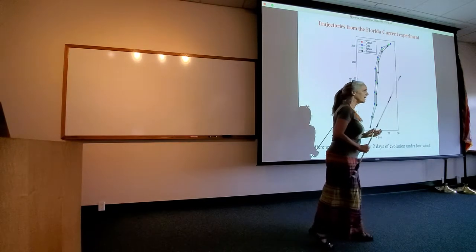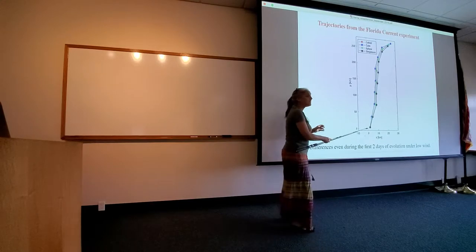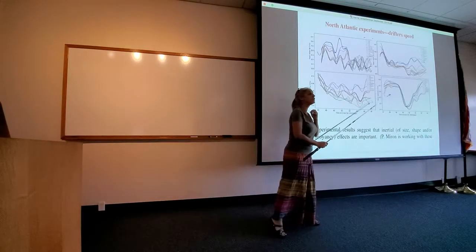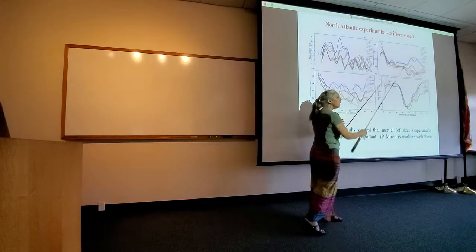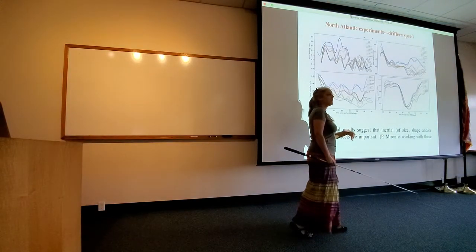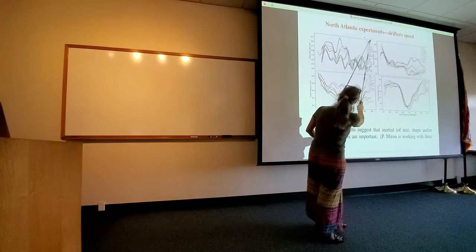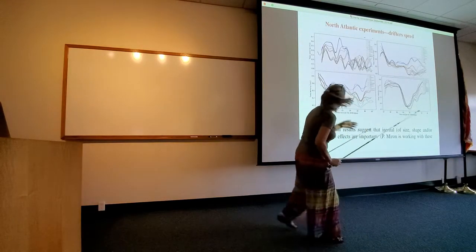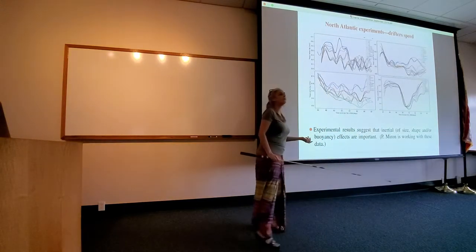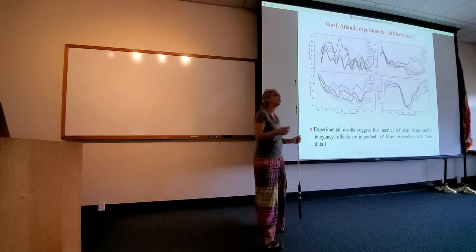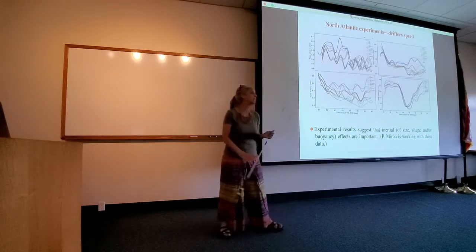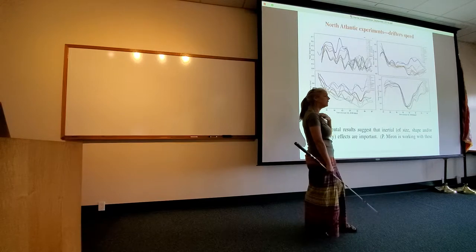Q: Did you deploy only one of each of these? A: This was because we were testing the drifters, so yes, we deployed just one. But in the experiment we did in the North Atlantic, we deployed several of the same shape at the same time - for example, here you can see a couple of cubes, we had like three spheres, three cubes, and so on. Not all of them ended up working - we have actually different sizes of spheres, and unfortunately only one of the biggest spheres worked, so we don't have the comparison between size for the same buoyancy and shape.